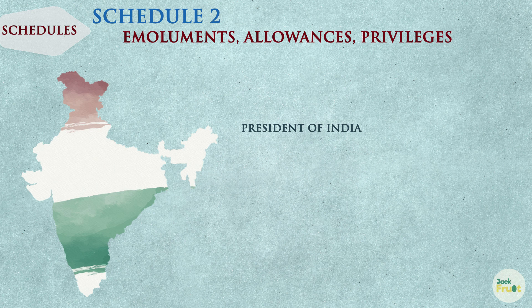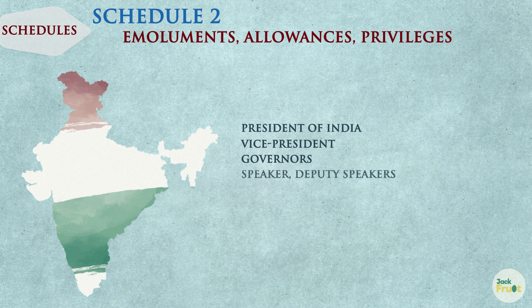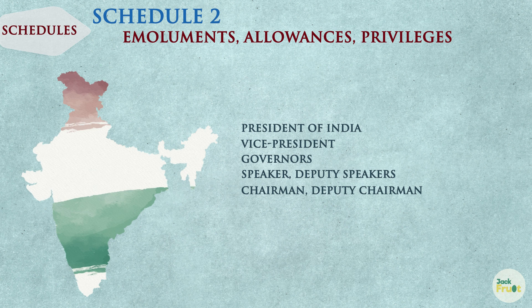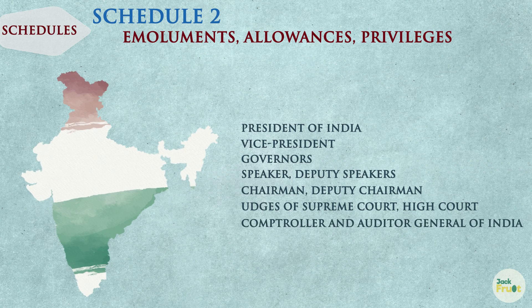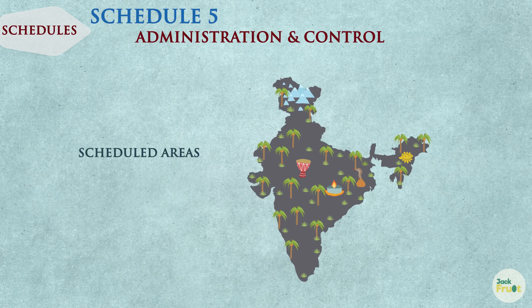The President of India, the Vice President, the Governors, the Speaker and Deputy Speaker of Lok Sabha and State Legislative Assembly, the Chairman and Deputy Chairman of Rajya Sabha and State Legislative Councils, the Judges of the Supreme Court, High Court, and the CAG. The 5th schedule contains the provisions relating to the administration and control of scheduled areas and scheduled tribes.